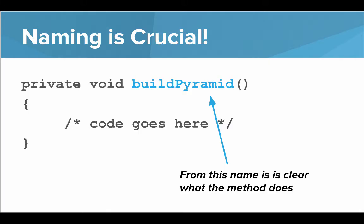So here we have a method called build pyramid and the key point here is that naming is crucial. From the name build pyramid it's clear what the method does.